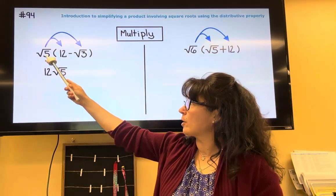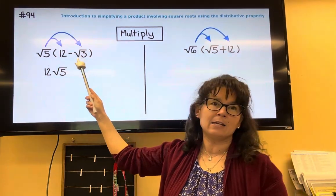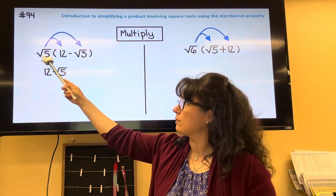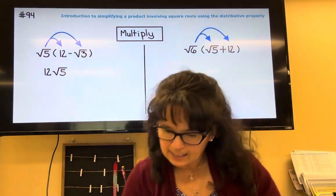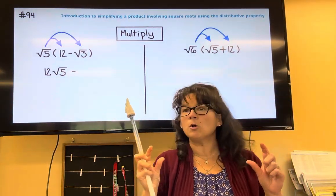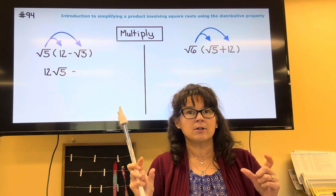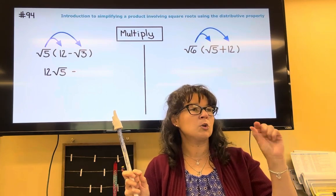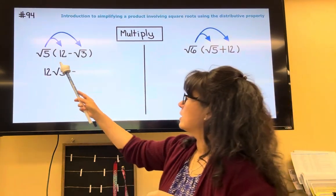Then when I take the square root of 5 multiplied by negative root 3, first of all, a positive times a negative is going to be negative. And then a reminder, when you multiply roots together, you have a root and you multiply their radicands.